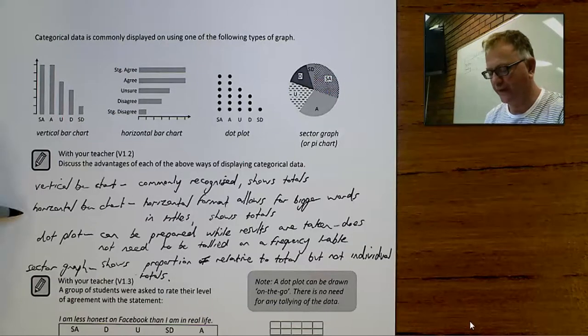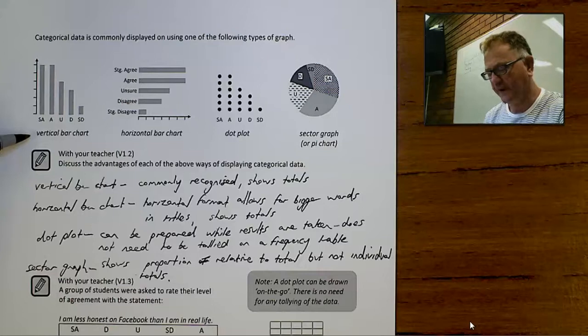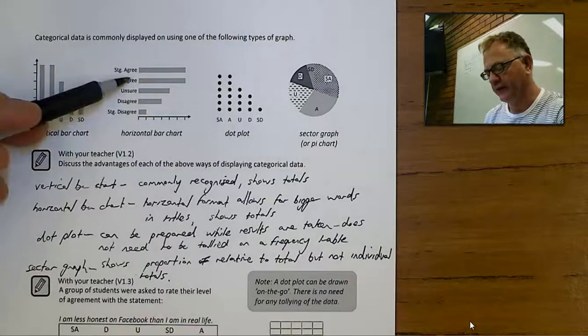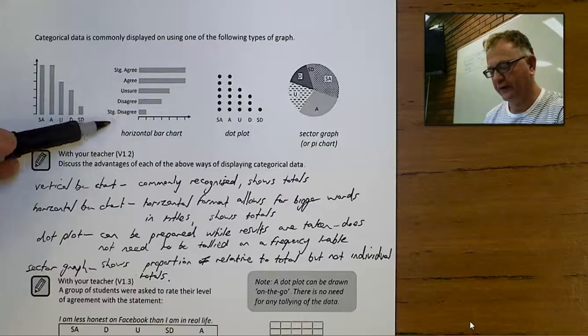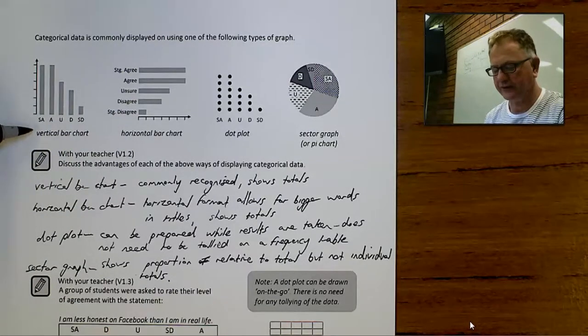The horizontal bar chart is really just the same graph on its side and has the advantage that if you've got categories with long words, you can actually write them in, whereas it's very difficult to do that in a vertical bar chart.